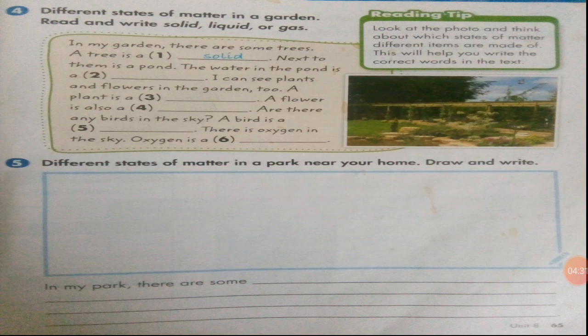Question number five: different states of matter in a park near your home — draw and write. In the given box you have to create a scene of any park or garden showing all three states of matter. Trees, plants, and flowers are solids; water in a pond is a liquid; and oxygen present in the air all around us is a gas. Draw a scene covering all three states.